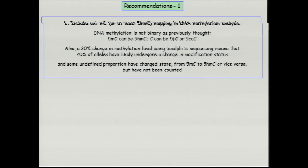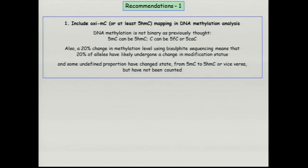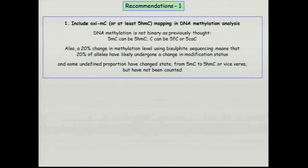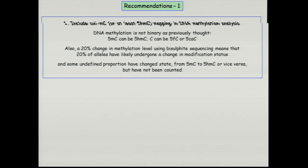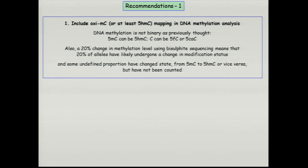The recommendations for this first part of the talk are to include OxyMC, or at least 5-HMC measurements, in any DNA methylation analyses that ENCODE might be contemplating in the future. 5-MC and 5-HMC can be distinguished by techniques such as TAB-Seq and OxBS-Seq, but these are too expensive to do routinely — they require about ten times as much coverage as whole genome bisulfite mapping, so one would have to do it at an amplicon level. Also remember that we are talking about 5 cytosine bases: unmodified, 5-MC, 5-HMC, 5-FC, and 5-CAC — but the change is binary, whereas what we call a change in methylation level is a change at the population level, with some undefined proportion having changed state.